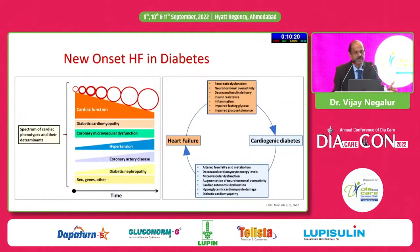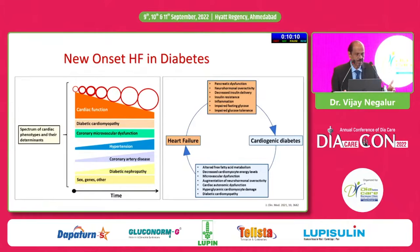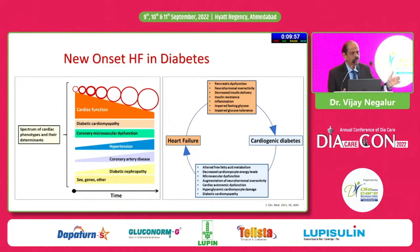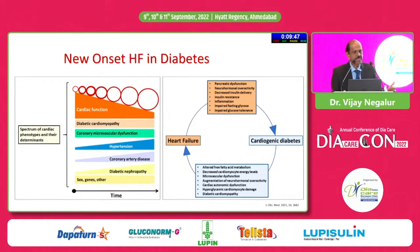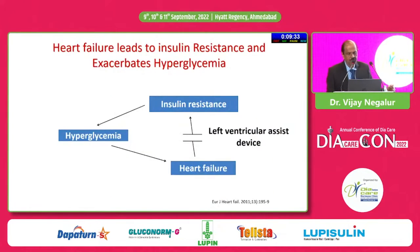In patients with heart failure and diabetes, sex matters: preserved ejection fraction heart failure is common in female patients, while reduced ejection fraction heart failure is common in male patients with diabetic nephropathy, coronary artery disease, and hypertension, leading to increasing left ventricular dimensions. Importantly, patients with heart failure also have decreased pancreatic function and insulin resistance, causing what is called cardiogenic diabetes — heart failure feeds diabetes and diabetes feeds heart failure.